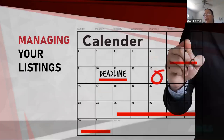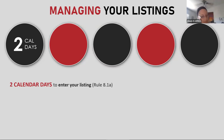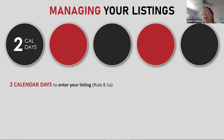Here is some information about managing your listing deadlines. There is a timeline: you have two calendar days to enter your listing from the agreed-upon date. So if today is the 11th and you told your client this is the agreed-upon contract date, you still have a two-day window to get it fully added to FlexMLS. After that, you could have a problem.